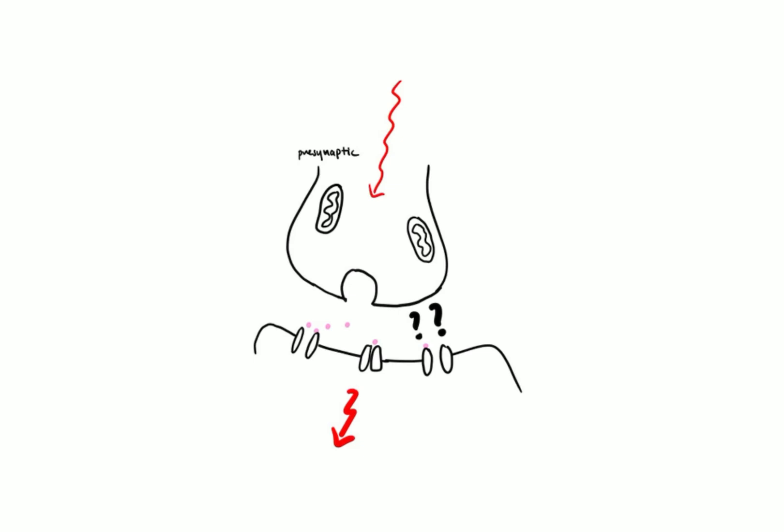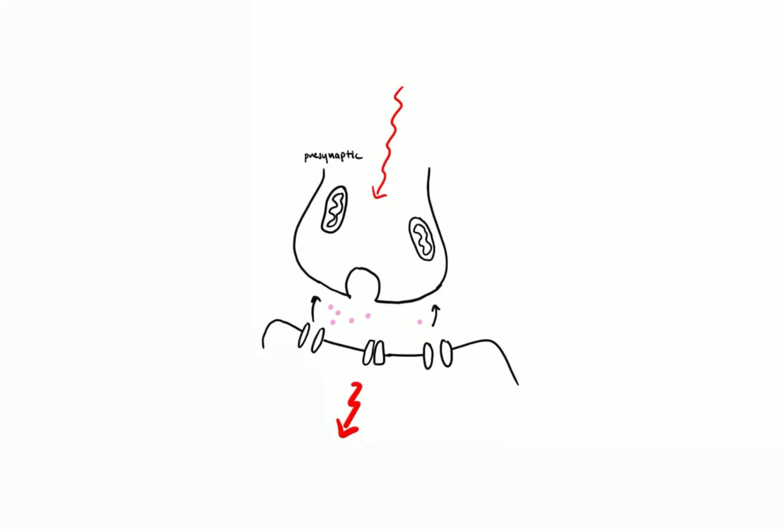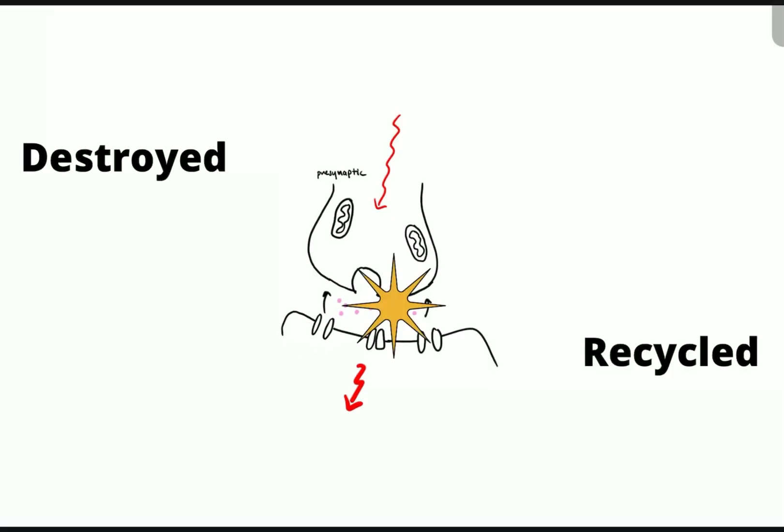But what happens to the neurotransmitter? Does it stay there forever, continuing to stimulate us all the time? It can't stay there forever. What happens is that it will be recycled or destroyed. The excess neurotransmitters will be either recycled or destroyed.